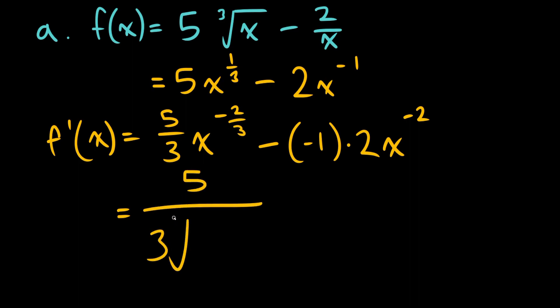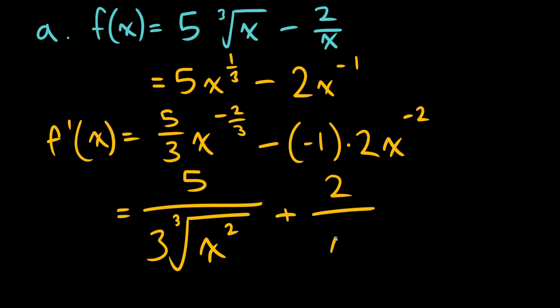This gives us 5 over the cube root of x squared, plus 2 over x squared. And that's your answer to 1a.